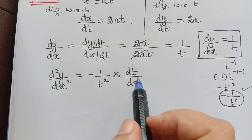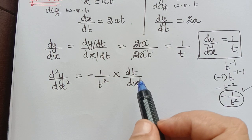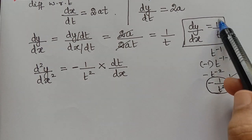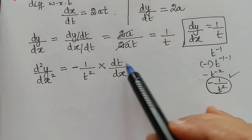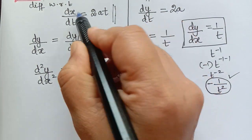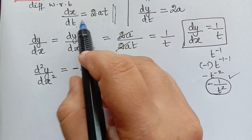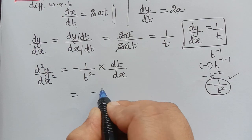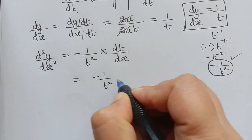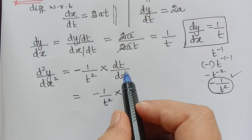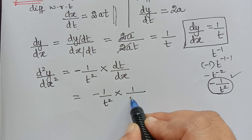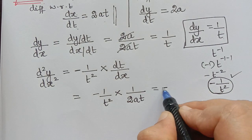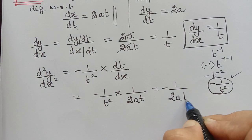Since we are differentiating with respect to x, we need dt/dx. From dx/dt equals 2at, we get dt/dx equals 1/(2at). Substituting, d²y/dx² equals minus 1/t squared multiplied by 1/(2at), which gives minus 1/(2at³).